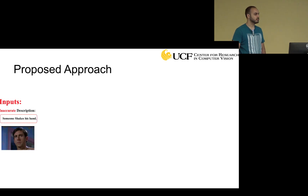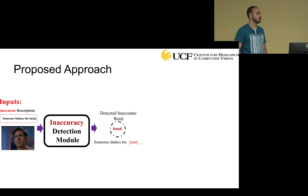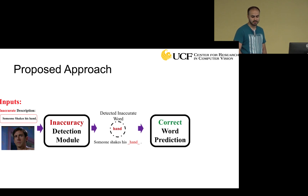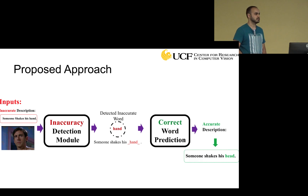Our proposed approach has two main modules. The first is the inaccuracy detection module, which takes the sentence and the video and detects an inaccurate word in the sentence. The second module is the correct word prediction module, which gets the inaccurate word in the sentence and suggests an accurate word to replace it and make the sentence accurate.